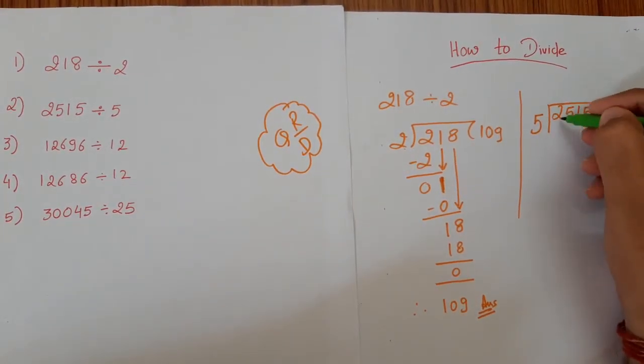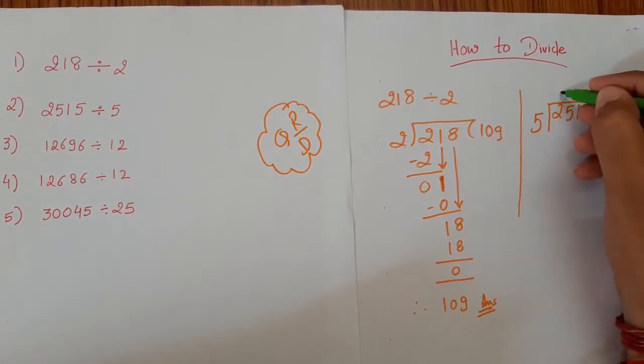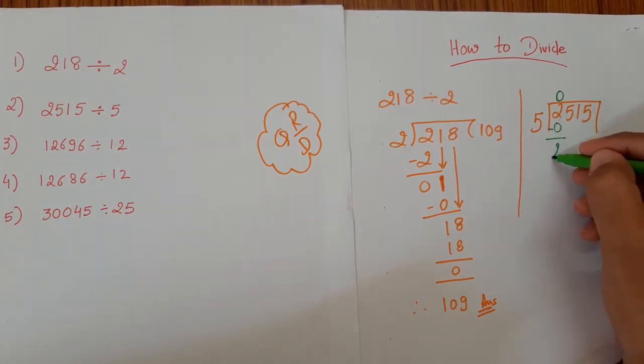Let's see the next problem. So 5, first number, focus on the first number. Is it divisible by 5? No. So we should multiply by 0. 5 times 0 is 0. So 2 minus 0 is 2.